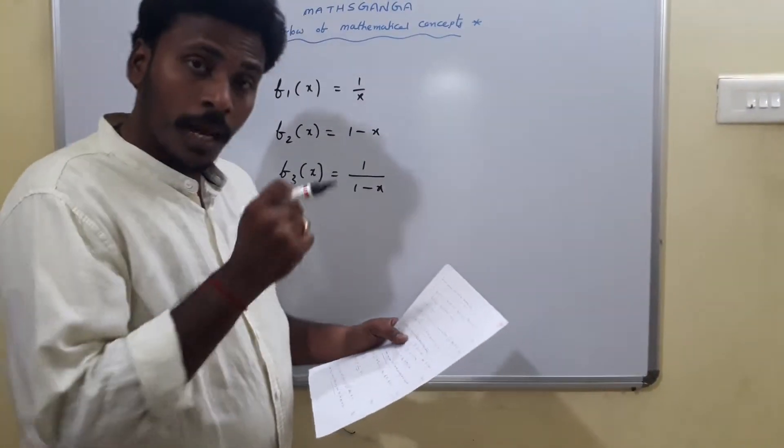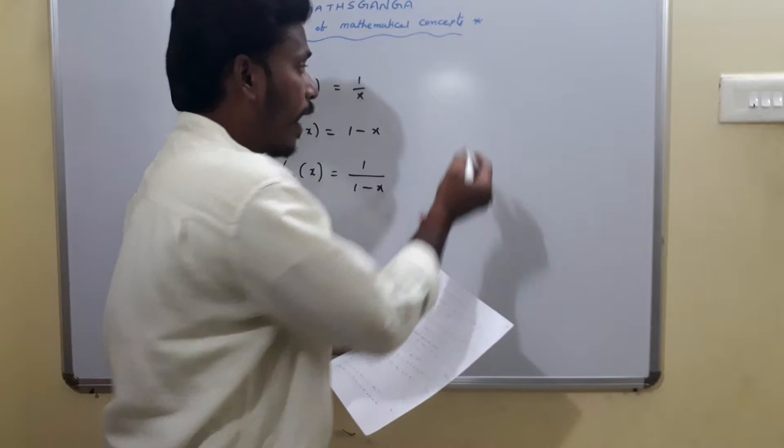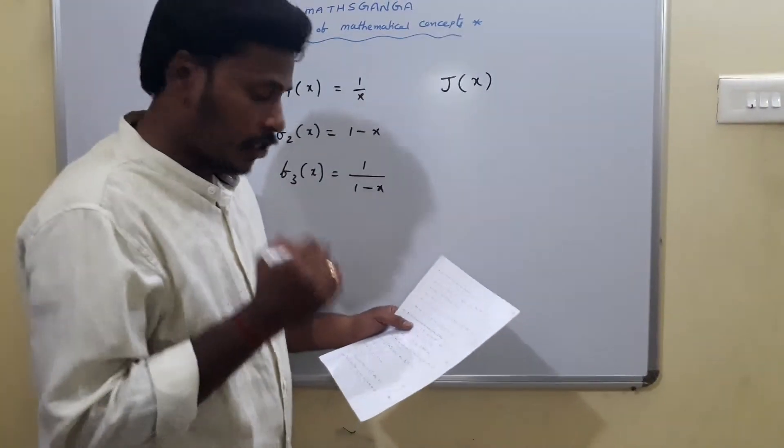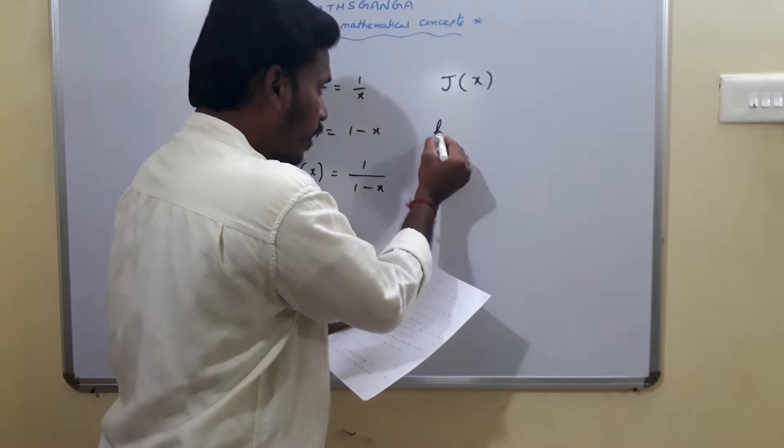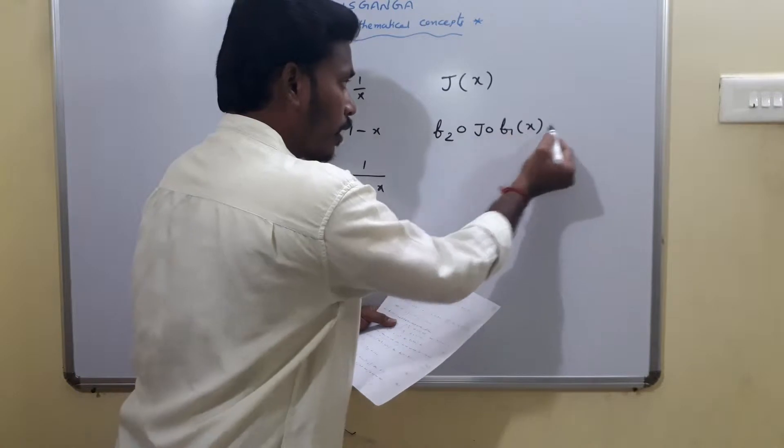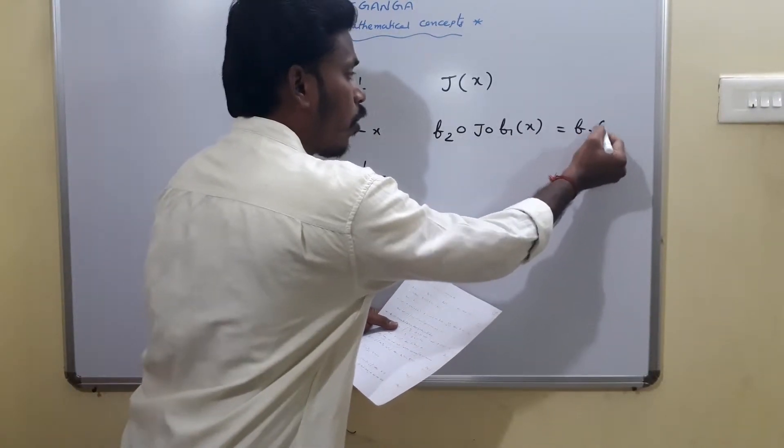These are the three functions, and they ask us to calculate another function J of x, such that F2 circle J circle F1 of x is equal to F3 of x.